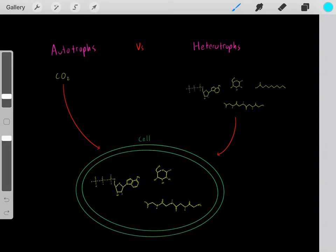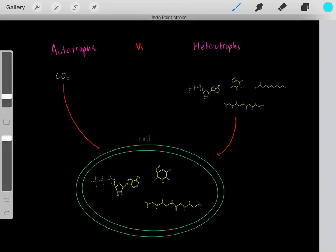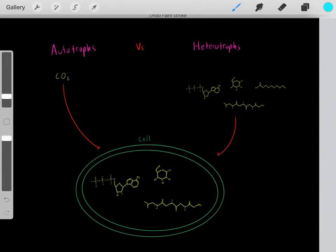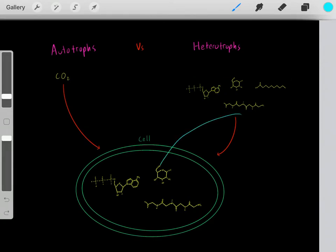For example, humans, we happen to be heterotrophs. So humans, we need to eat proteins and fats and carbohydrates. And we eat these macromolecules as a source of carbons to create our own nucleic acids, proteins, and carbohydrates.